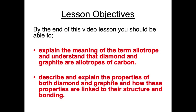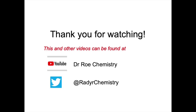As we come to the end of this video lesson, it's important to look back at our lesson objectives. By the end of this video lesson, you should now be able to explain the meaning of the term allotrope and understand that diamond and graphite are allotropes of carbon. You should also be able to describe and explain the properties of both diamond and graphite and how these properties are linked to their structure and bonding. Thank you for watching this video. There are more videos at our YouTube channel, Dr. Rho Chemistry, and at our Twitter site, at Rattachemistry.